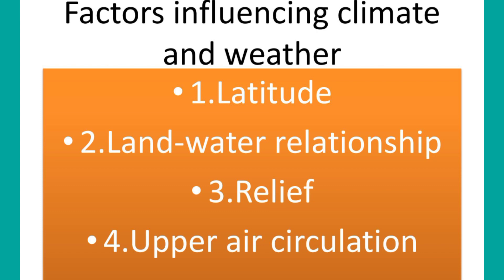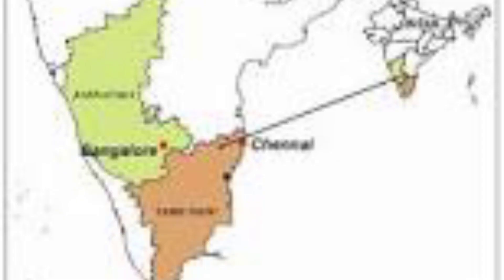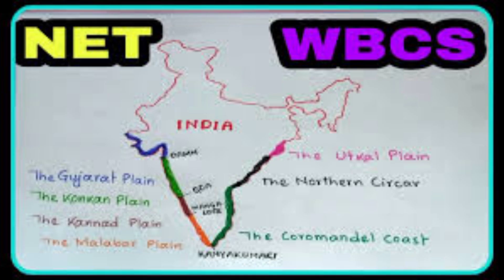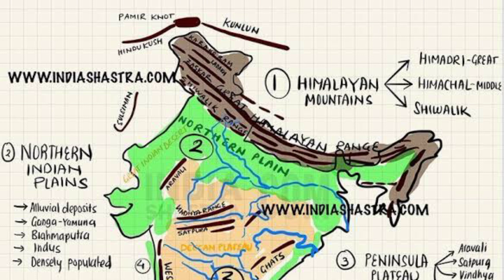Next, we look at factors influencing climate and weather. It is observed that for some places, such as Chennai, there is not much difference in temperature across months. Other places, such as Delhi, have wide differences in temperature across months. India experiences wide variation in temperature. The northern portion is bounded by the Himalayas, whereas the southern peninsula is surrounded by seas. Some places are far from the coast and are inland, while some are at high altitude.